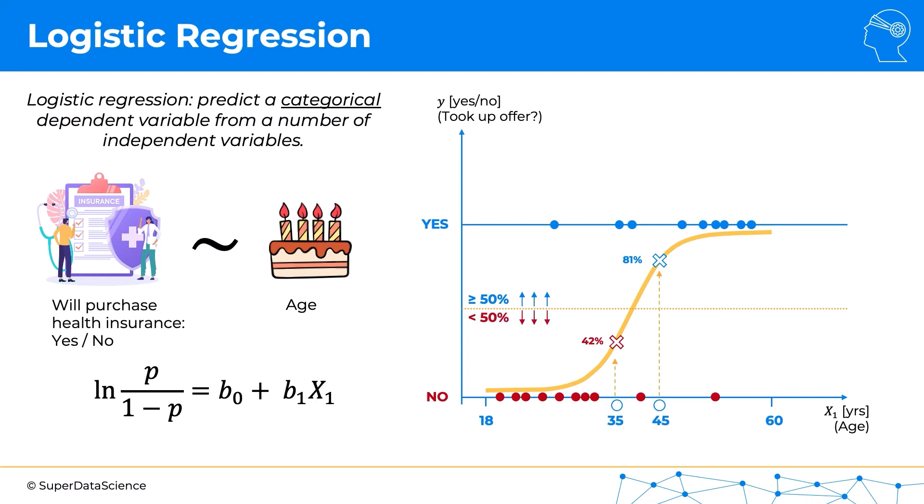Our points would end up here. So based on this logistic regression, we would make the conclusion that the 35-year-old would not purchase our insurance plan, and the 45-year-old would purchase our insurance plan.